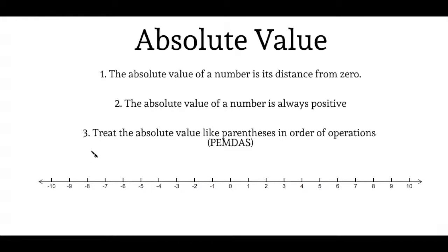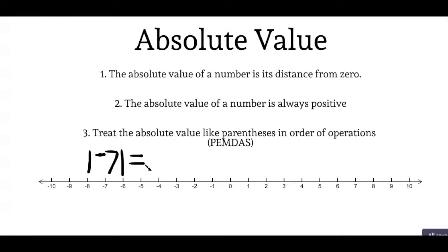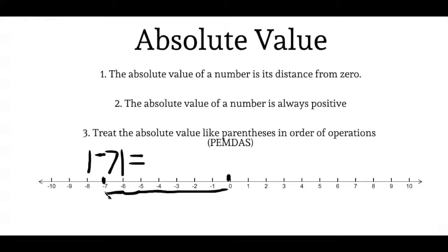So now let's look at how absolute value is written. It's written like a set of bars with the number inside. Using negative seven as an example, you'd see bars around the negative seven. Going back to our definition — the absolute value of a number is its distance from zero — we look at zero and negative seven on the number line and count: one, two, three, four, five, six, seven. From zero to negative seven, the distance is seven, so the absolute value of negative seven equals seven.